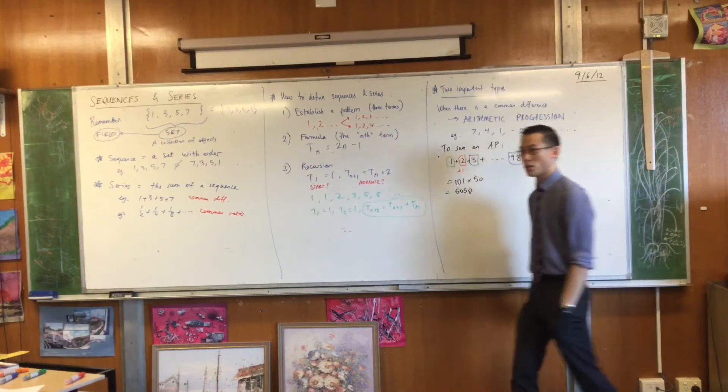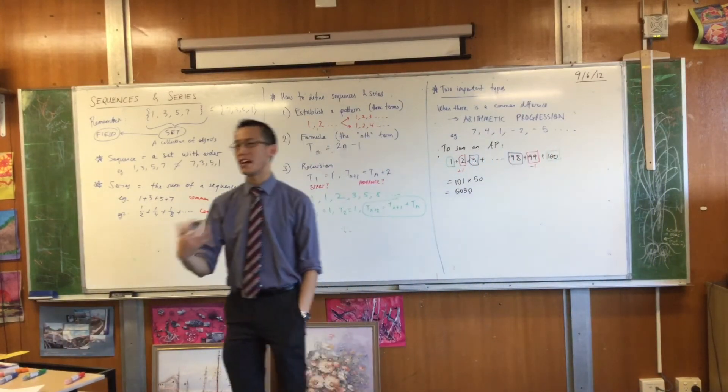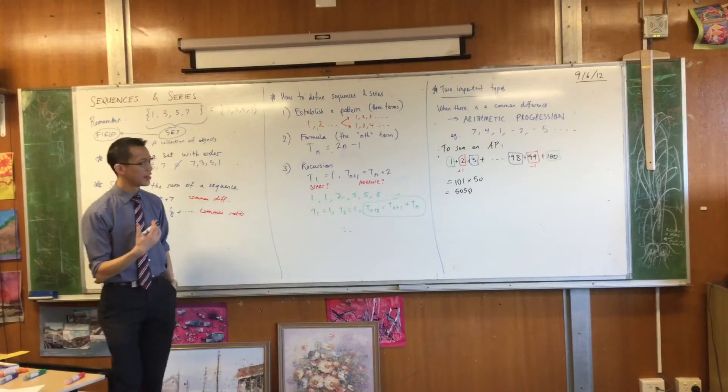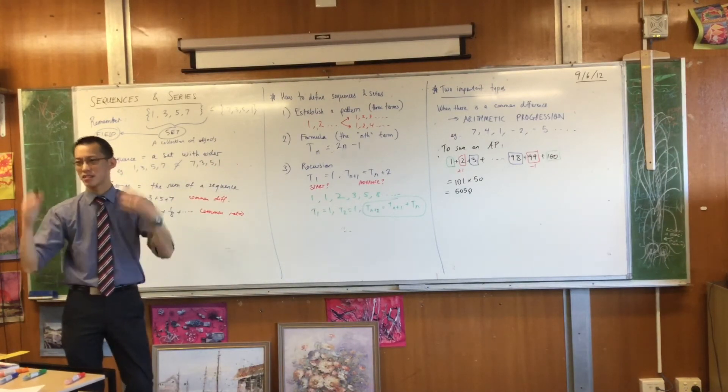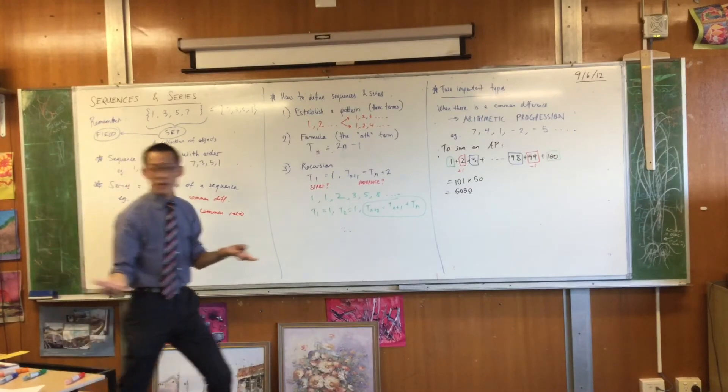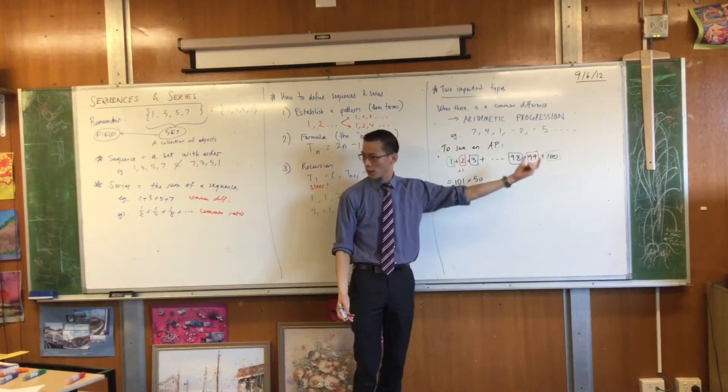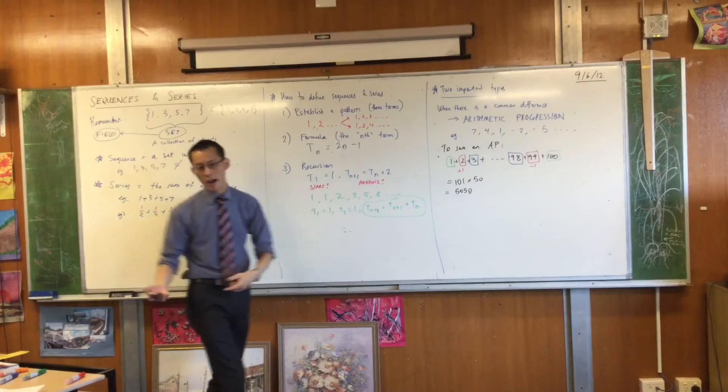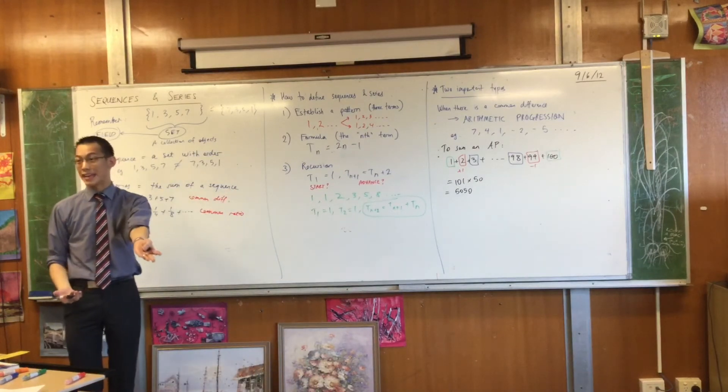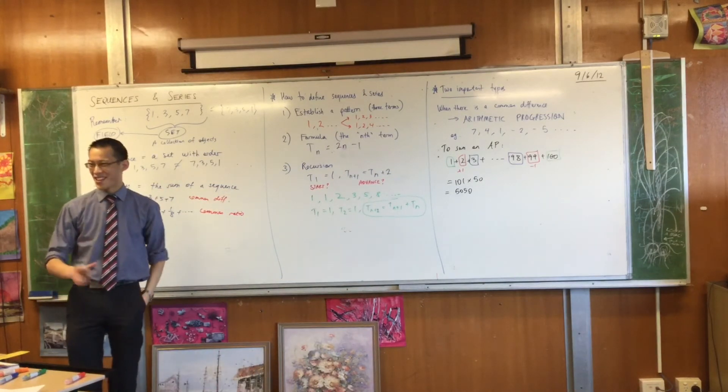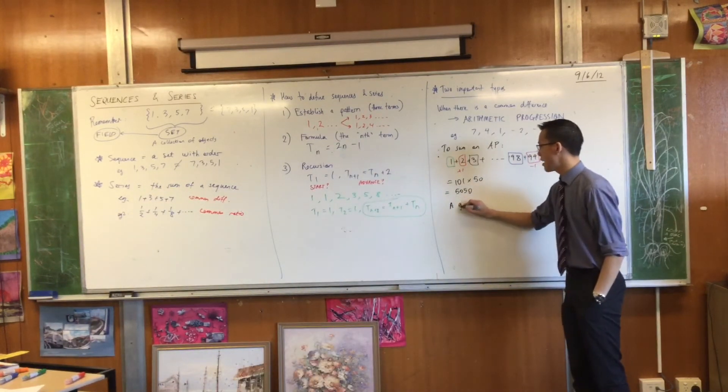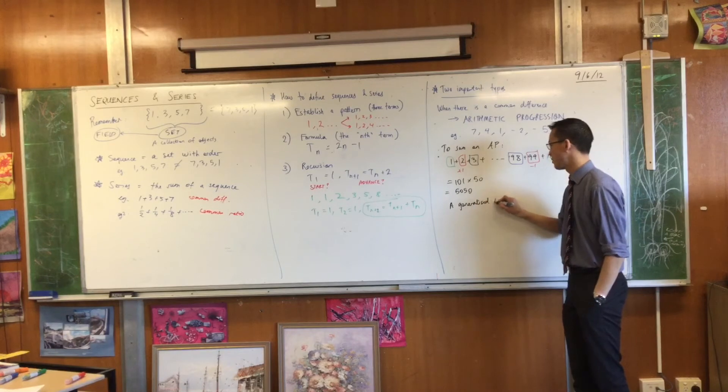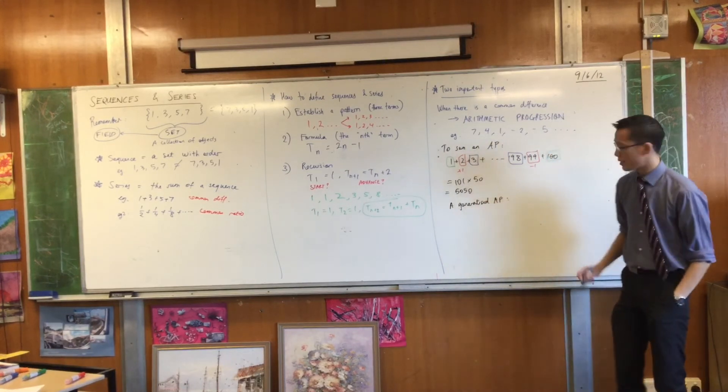Now, what mathematicians are always searching for is a way to generalize this. How can we go from a specific example to one that works all the time, if it was a thousand or a million? Well, what if the common difference wasn't one? That was very convenient. What if it was like three, or five, or two and a quarter, or negative eight? So, we need to write this in a more general form. So, a generalized AP, algebraic progression, would look like this.